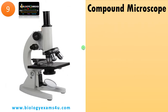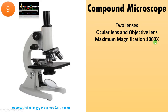To see a cell we need a compound microscope. A compound microscope is so called because it is made up of two lenses: the ocular lens and the objective lens. There are often many objective lenses called low power, middle power, and high power based on magnification. Maximum magnification is 1000x.